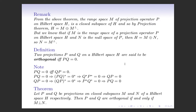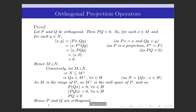Now we shall prove a theorem: let P and Q be projections on closed subspaces M and N of a Hilbert space H respectively, so the range space of P is M and the range space of Q is N. Then P and Q are orthogonal if and only if M is orthogonal to N. To prove the forward direction, let P and Q be orthogonal, so PQ equals the null operator. For each x in M and y in N, the inner product of x and y equals the inner product of Px and Qy.